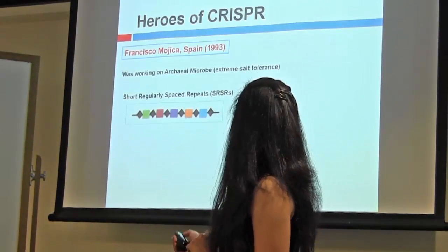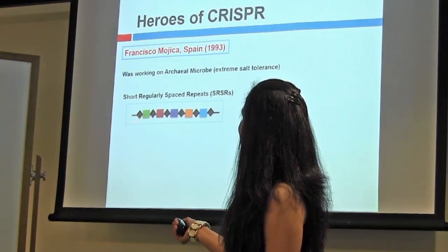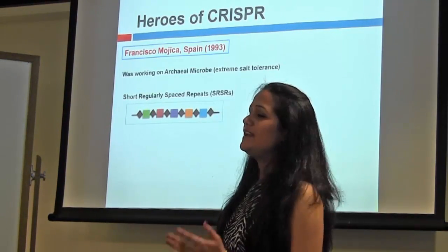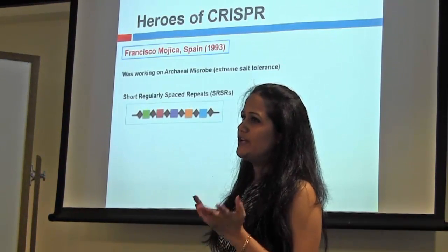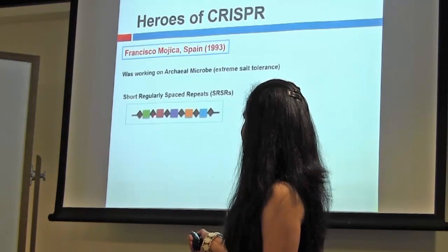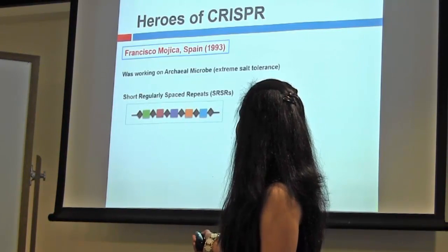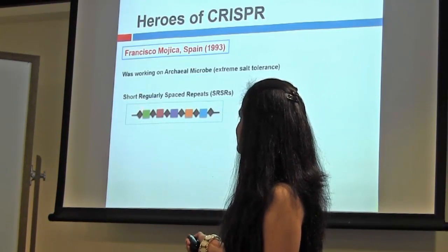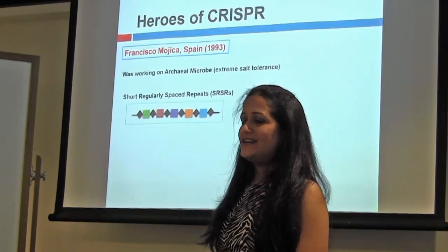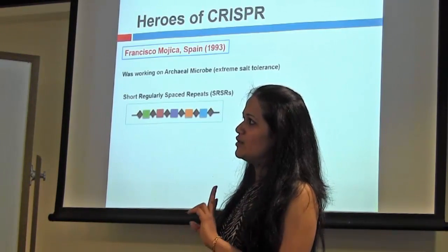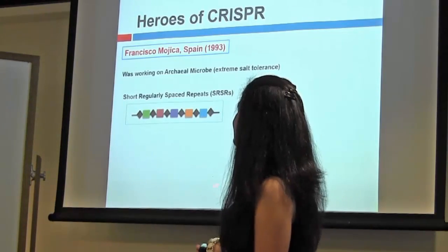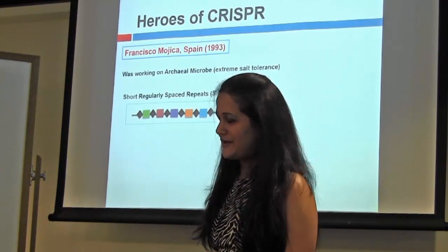What are these sequences? As you can see here, the diamonds represent the repeat sequence, which generally range from 20 to 30 base pairs and are identical to each other. They are separated by a spacer sequence, which is not identical to each other but again spans around 20 to 30 base pairs. This is now called the CRISPR loci.